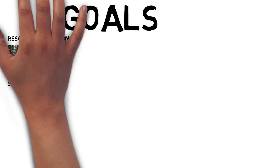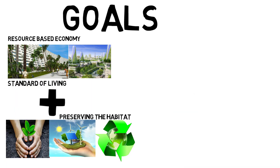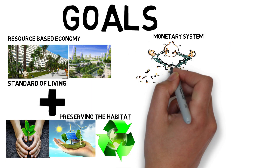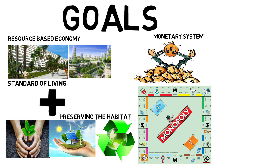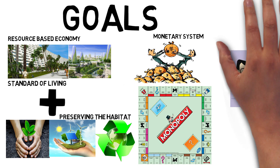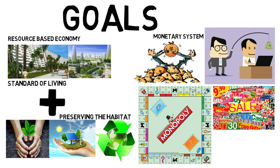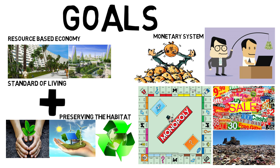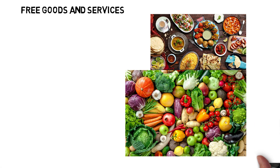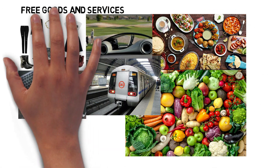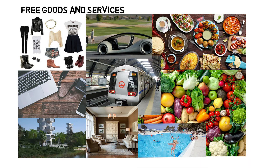In an RBE, the goal is to provide for the highest possible standard of living for everyone on Earth, while preserving the habitat. The current monetary system's goal is to maintain consumption, to secure the movement of money. It is basically an incentive system and a distribution architecture. In an RBE, all goods and services are abundantly available for everyone for free, and ownership is replaced with access.